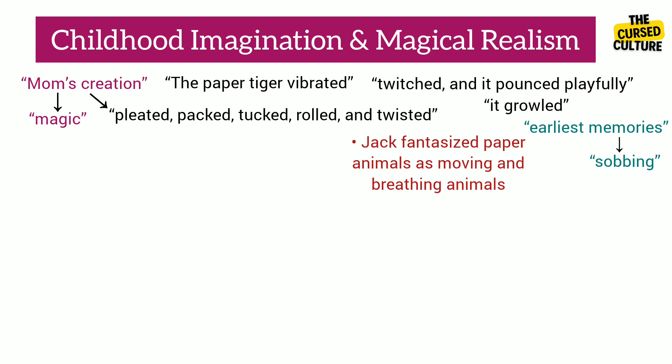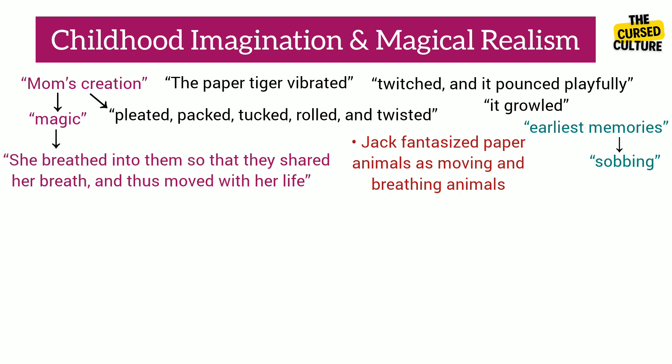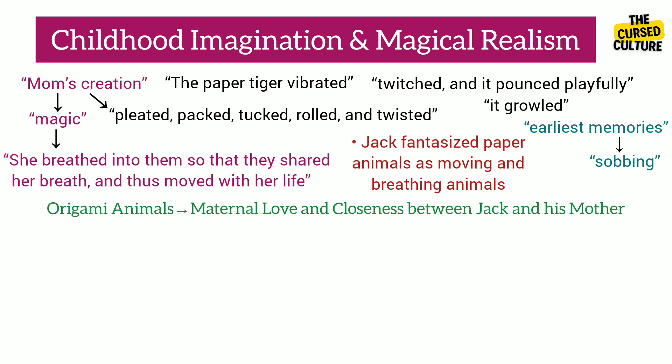Jack as a young child was very close to his mother, and this love for his mother made him feel her as extraordinary, to the point he thought that she had breathed into them so that they shared her breath, and thus moved with her life. The origami animals become symbolic of maternal love and closeness between Jack and his mother. Also, Jack was not at an age where he could grasp race issues or logic and reason, which heightened his childhood imagination.